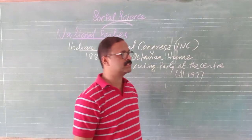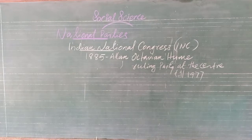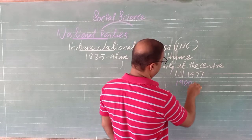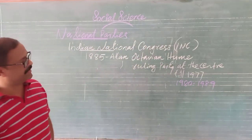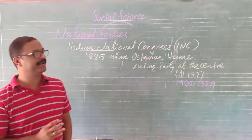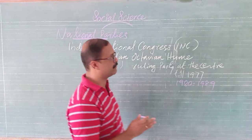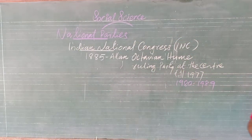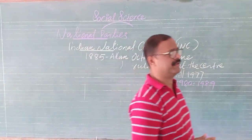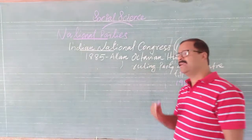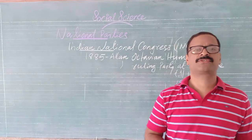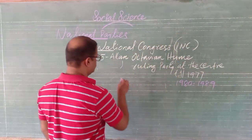The Congress was the ruling party at the centre till 1977, and then again from 1980 to 1989. From independence till 1977, this party continuously ruled the country. After 1989, its support declined, but the party remains present throughout the country. It is a centrist party, cutting across all social divisions.